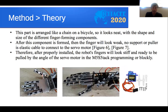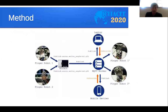The parts are arranged like a chain on a bicycle, so it looks neat, with the different shapes and sizes forming the finger components. After the components are formed, the finger will look supported by an elastic cable connecting to the servo motors. After proper installation, the robot fingers look stiff and ready to be pulled by the angles of the servo motors.